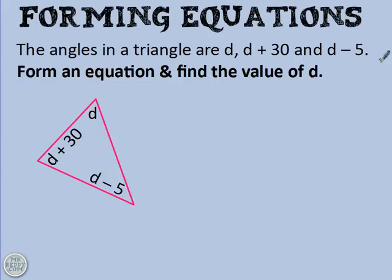Oh, hooray! Another geometry question. So, the angles in a triangle are D. That's strange. D add 30. This just gets weirder. And D take away 5. What? Form an equation and find the value of D. Okay, well, handily there's a little diagram. That's useful. If not, I'd probably have had to draw one, because that would have made my life really difficult otherwise.